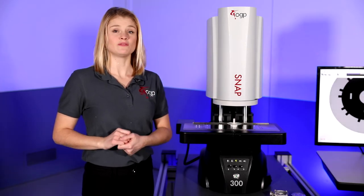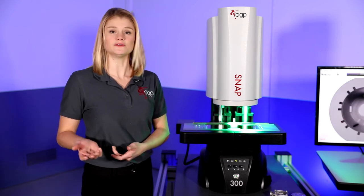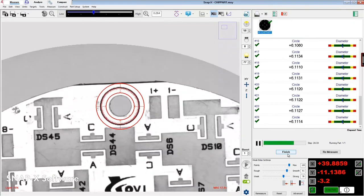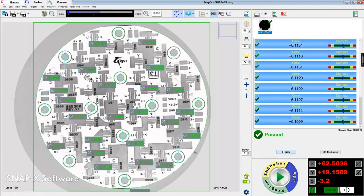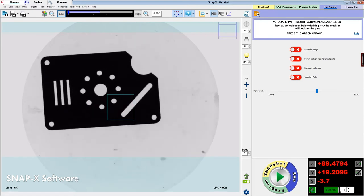SNAP systems are compatible with multiple software applications allowing you to choose the one that's right for you. SNAP X measurement software provides the user with a simple yet powerful interface with a full range of feature measurements with or without a pre-programmed routine.